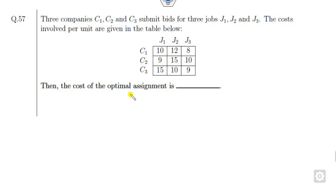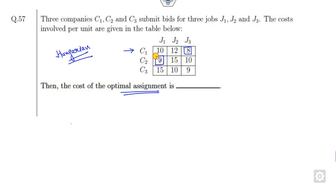Look at this — this is an assignment problem. You may apply the Hungarian method, but I will tell you a shortcut. Look at the first row: the minimum value is 8. In the second row, the minimum value is 9. In the third row the minimum value is also 9, but it is already assigned. The next smallest value is 10. So the answer will be 8 plus 9, and we need to decide the third assignment.